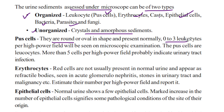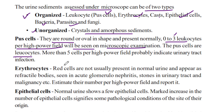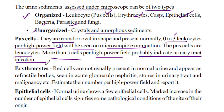0 to 3 leucocytes per high power field will be seen on microscopic examination in normal urine. More than 5 cells per high power field will probably indicate urinary tract infection.